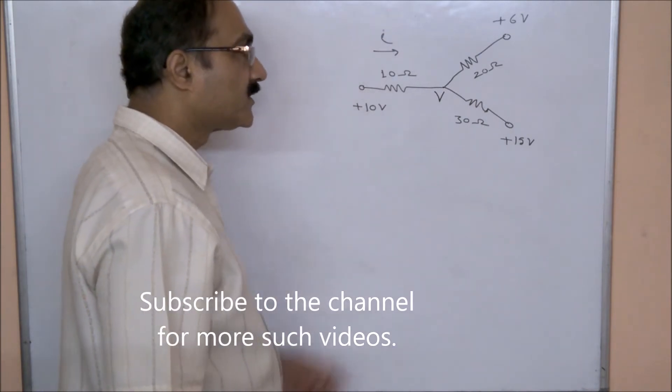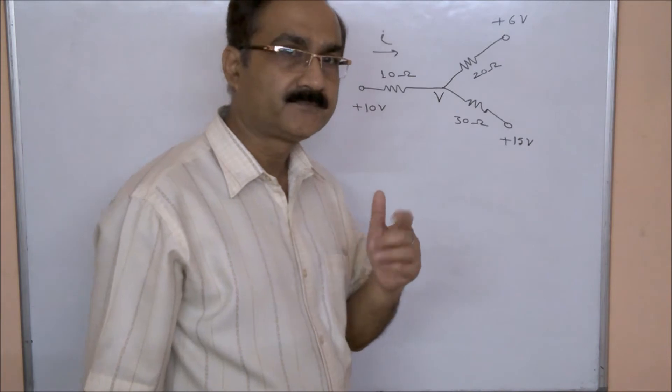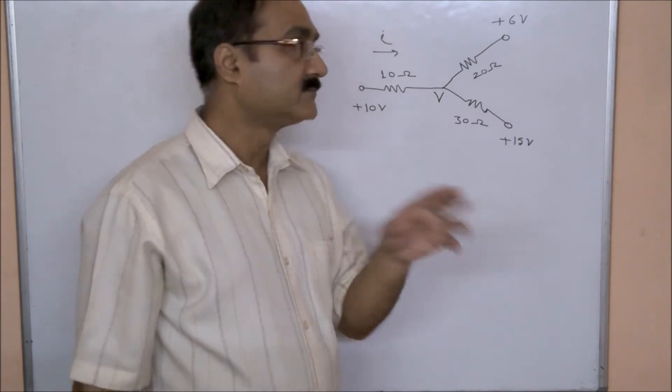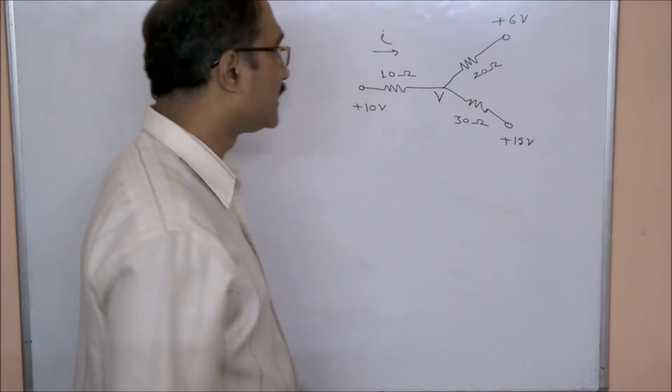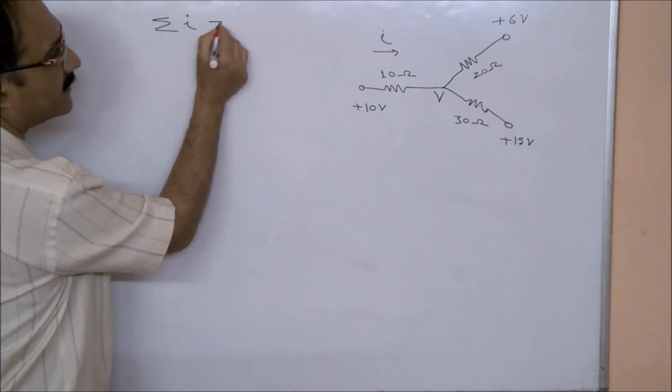Now what we'll do is we'll apply Kirchhoff's law, Kirchhoff's first law, the junction law, in the form: the summation of all incoming currents is zero.